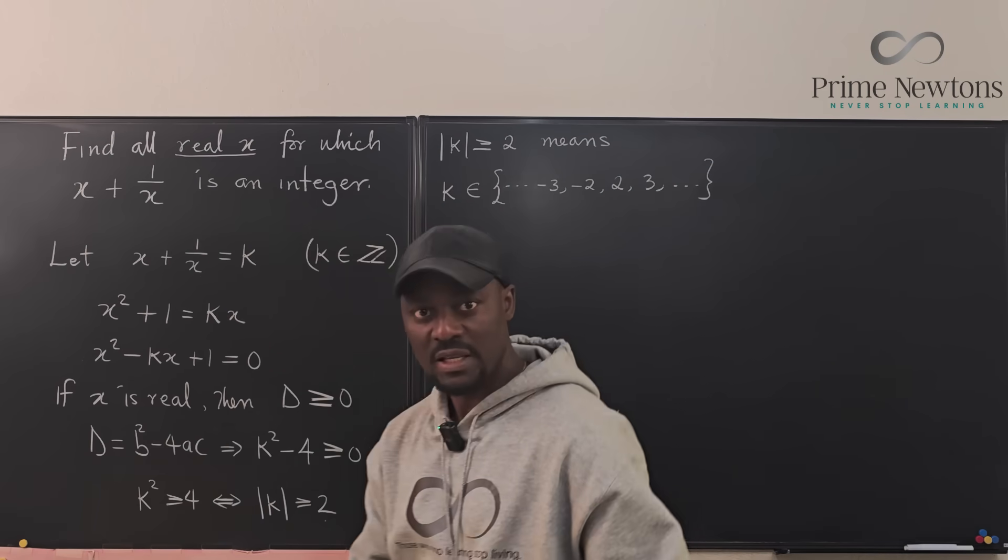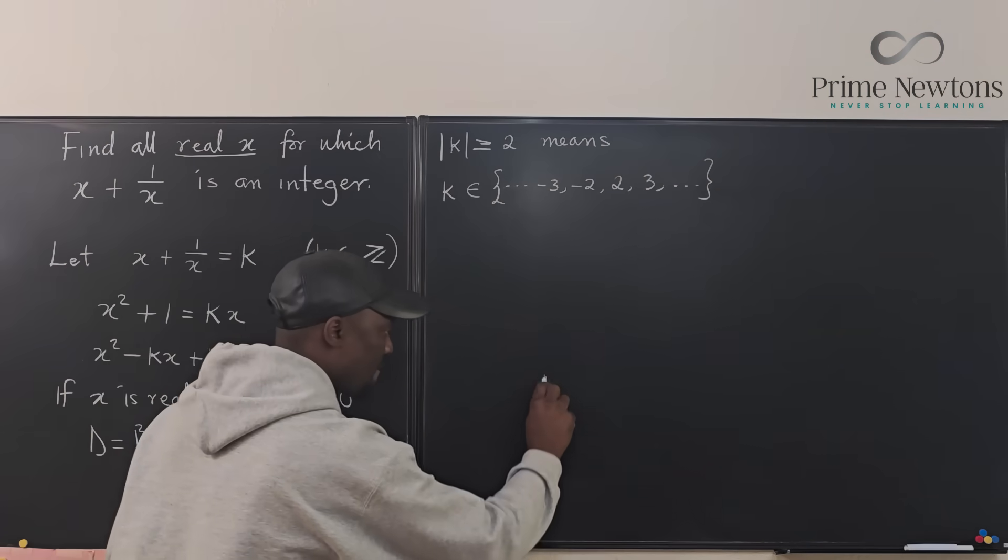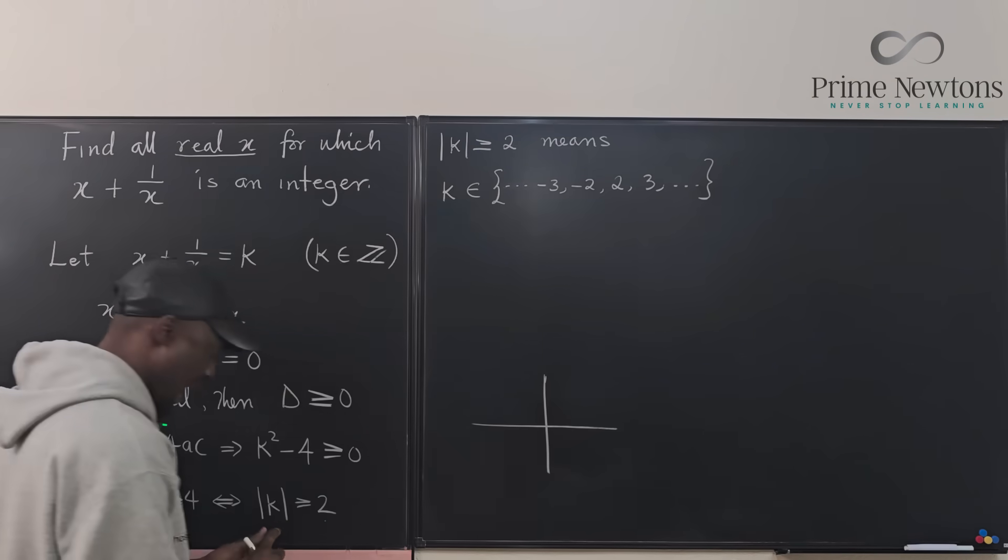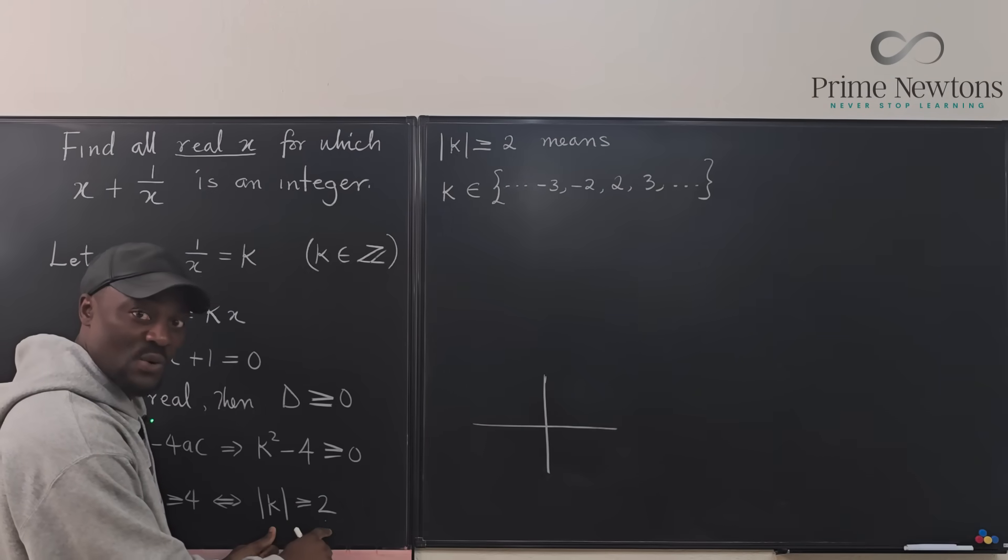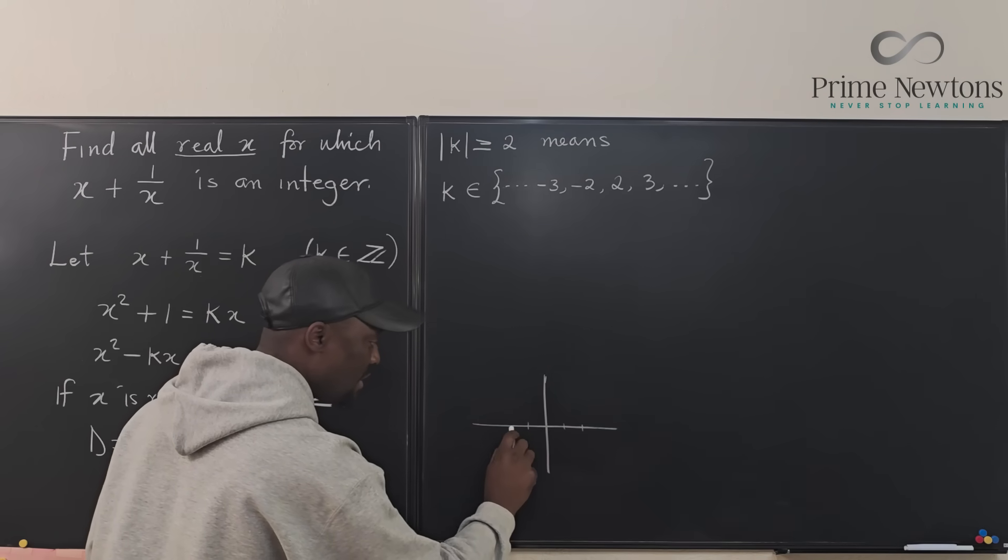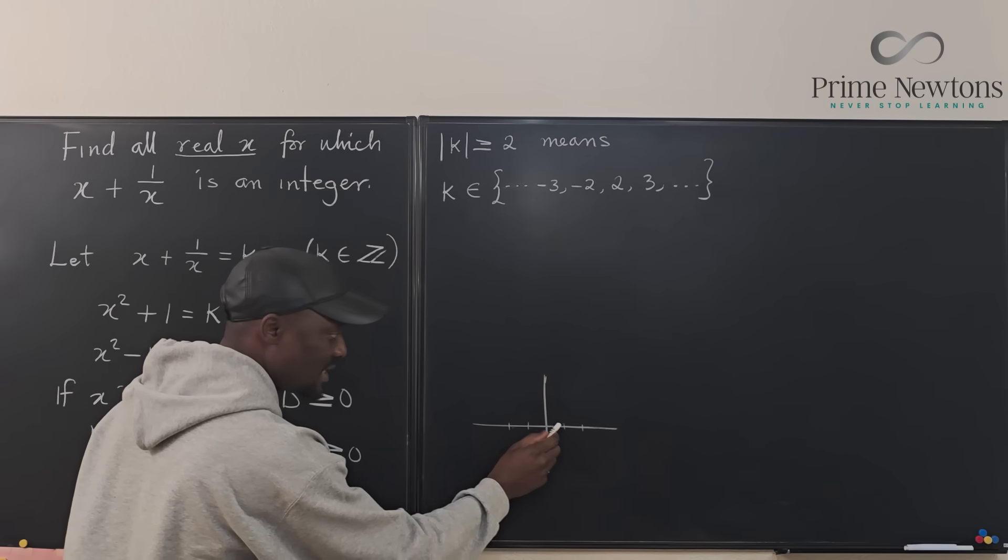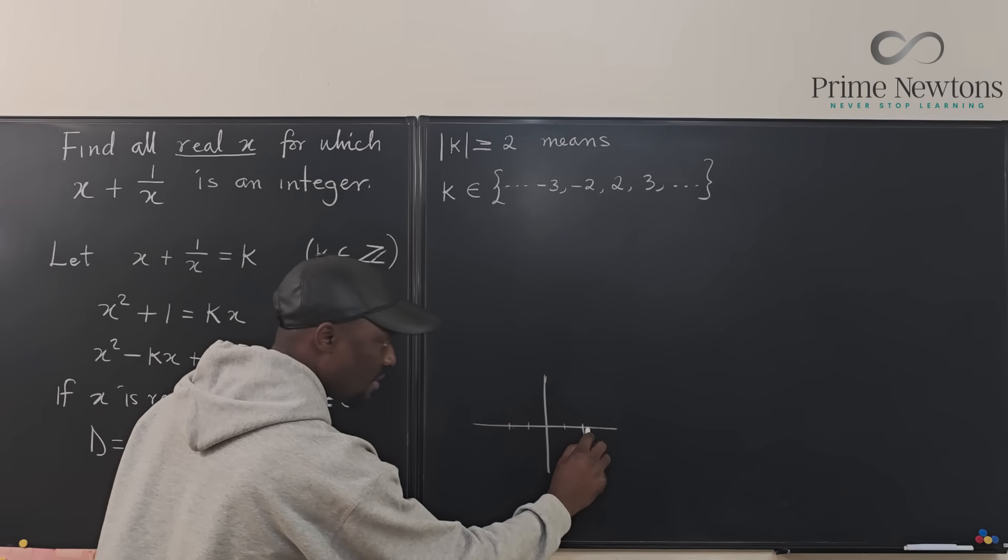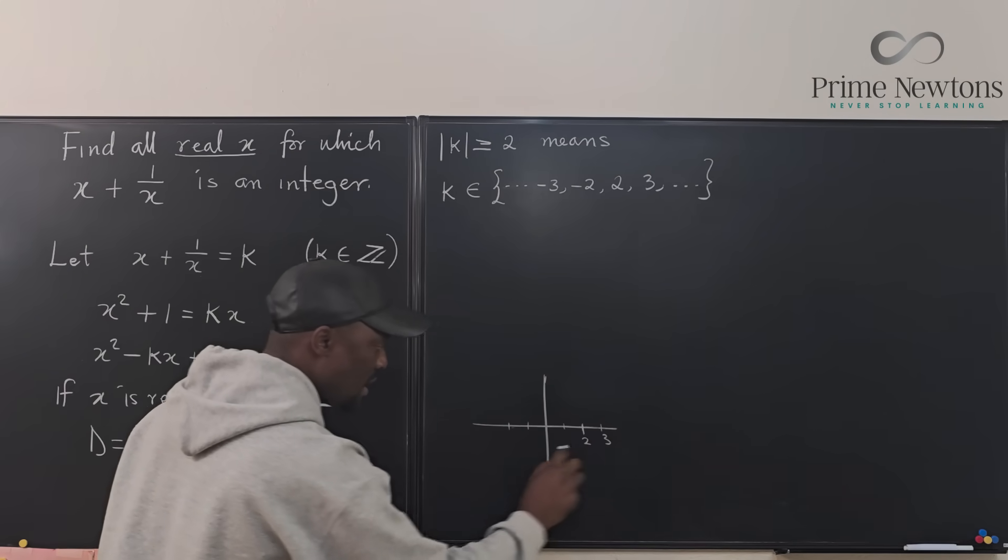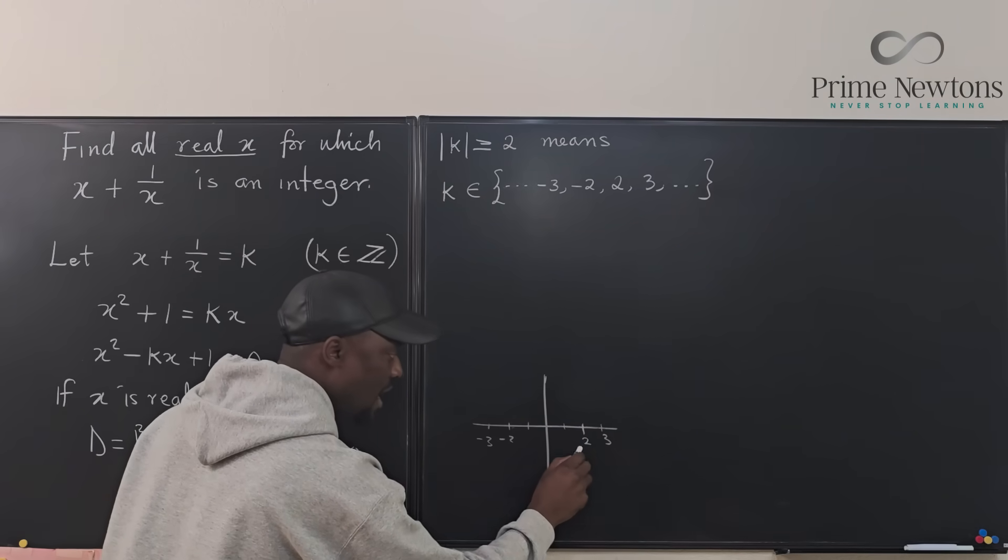Do you see what I'm saying? So this means that if the absolute value of k is greater than or equal to 2, it means k must be two steps away from 0. That's the meaning of absolute value. The distance of k from 0 is 2. So k is not in this gap. k starts from here, from 2, 3, or from negative 2, negative 3.